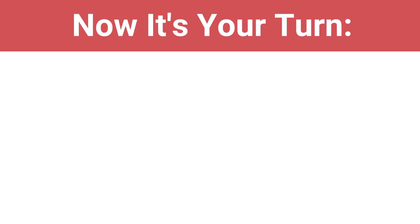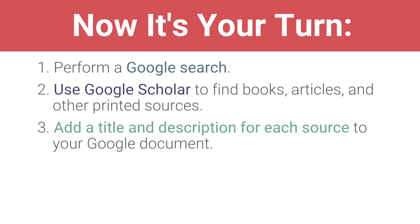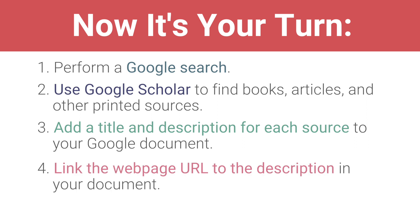Now it's your turn. Perform a Google search using words, phrases, or questions that are relevant to your paper topic. Use Google Scholar to find books, articles, and other printed sources. Add a title and a description for each source to your document. Link the web page URL to the description in your document. Then move on to the next video, where you will assess the credibility of the sources your search returned.